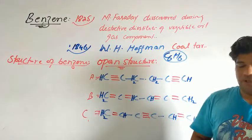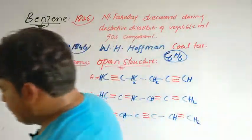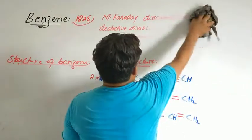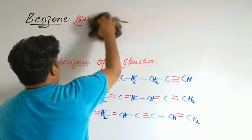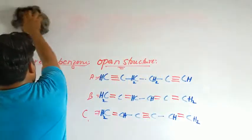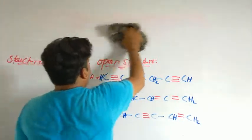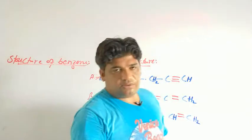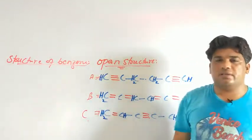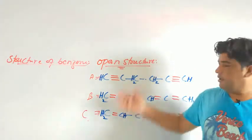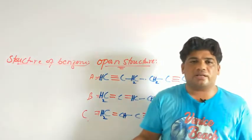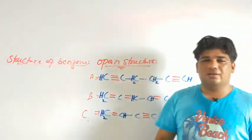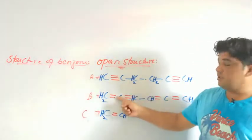But such open structures of benzene were later on rejected. Why were they rejected? Because these structures of benzene did not match actual benzene. The actual benzene experimentally was showing something different from what these structures suggested. If these were the correct structures, they should explain the properties of actual experimental benzene, but they could not — so they were ruled out.